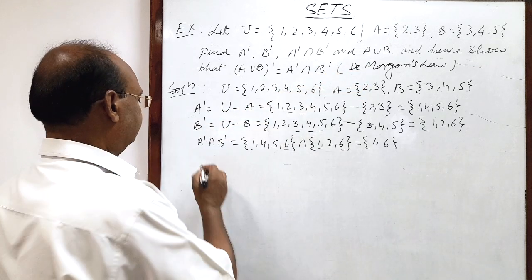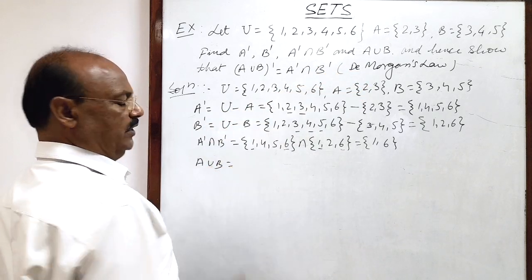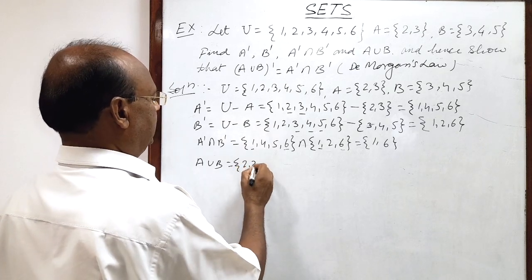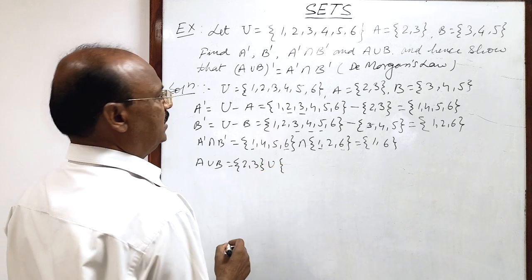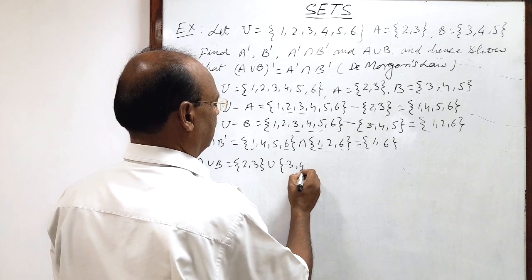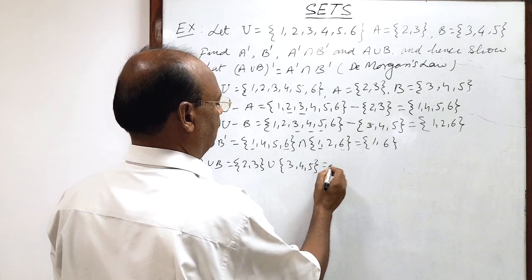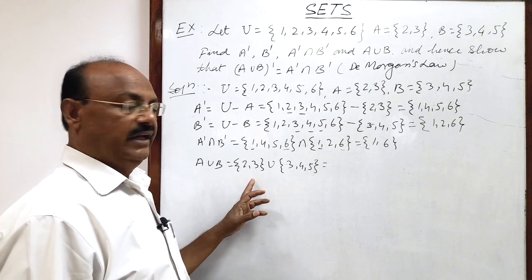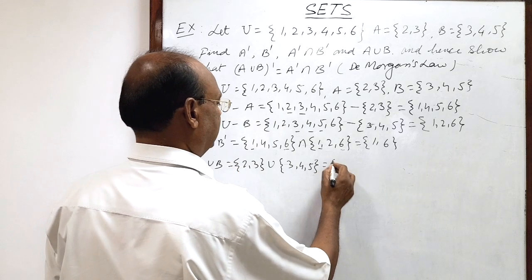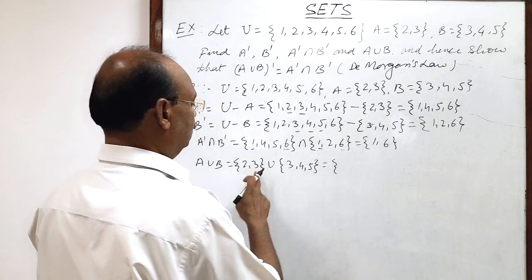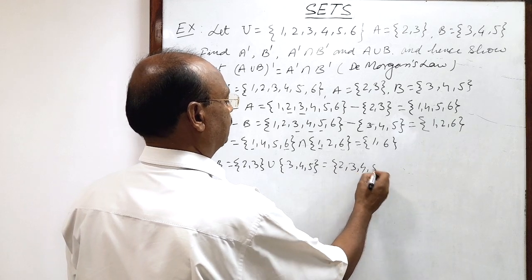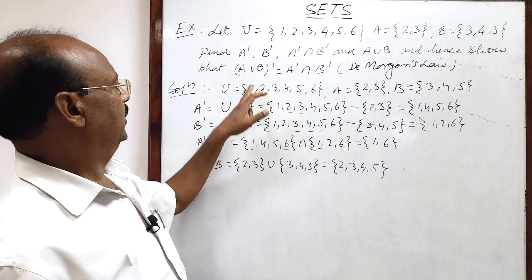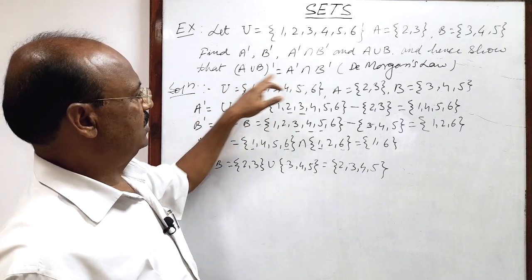Now let us find A union B. Set A has elements {2, 3} and set B has elements {3, 4, 5}. For the union, we collect all elements from both sets, but common elements are written only once. So A union B equals {2, 3, 4, 5}.